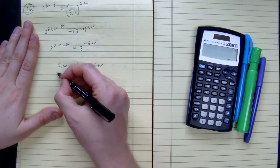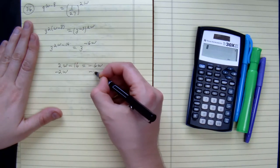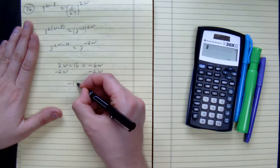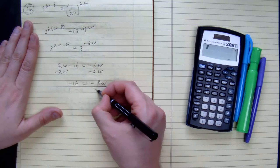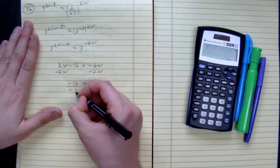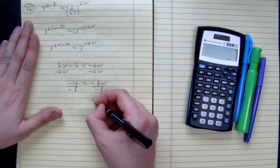Subtract 2w from both sides. We get negative 16 equals negative 8w. Divide both sides by negative 8. We get w equals 2.